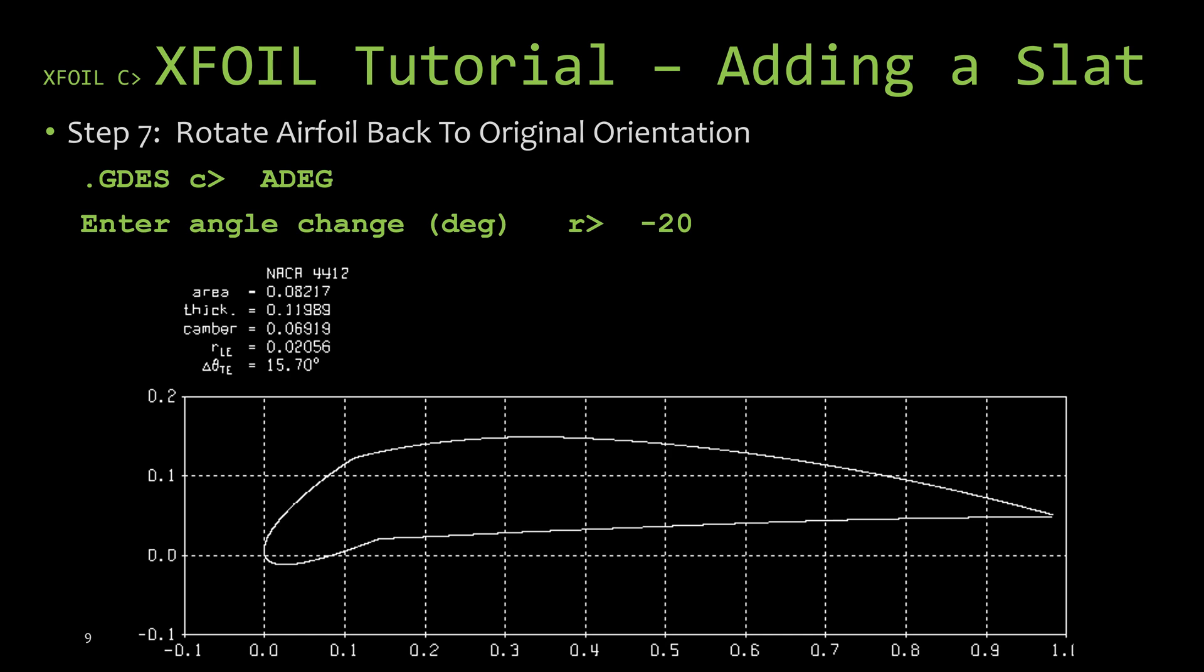In a previous slide, I told you to remember the angle you deflected downwards in the flap command, because now we're going to rotate the airfoil in the opposite direction. Using the flap command, we deflected the rest of the airfoil down 20 degrees, leaving the slat at zero degrees.